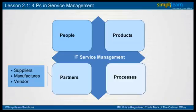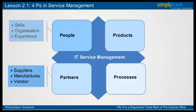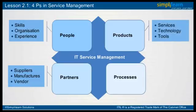The second is the people perspective. This is primarily concerned with the soft side — IT staff, customers, and other stakeholders. For example, does the IT staff have the correct skills and knowledge to perform their roles? The third is the products or technology perspective, which takes into account IT services, hardware and software, budgets, and tools.